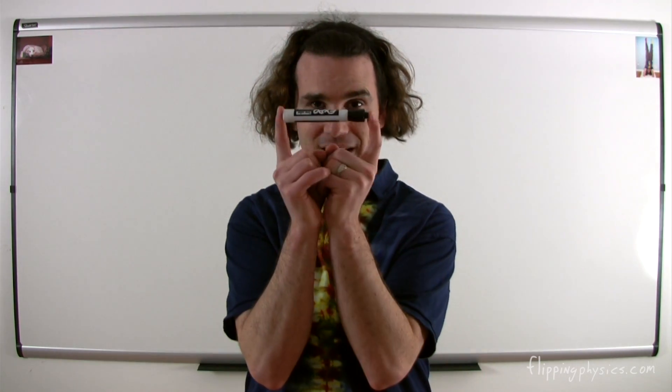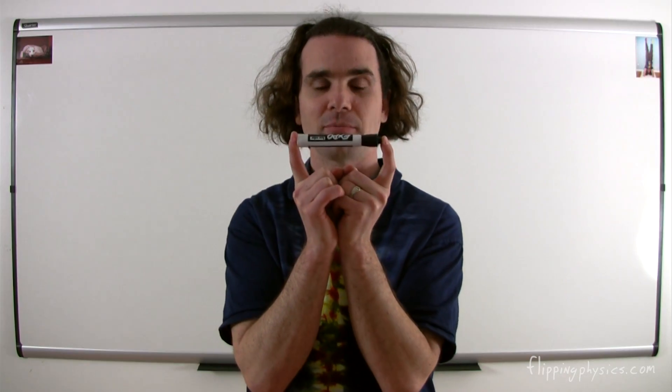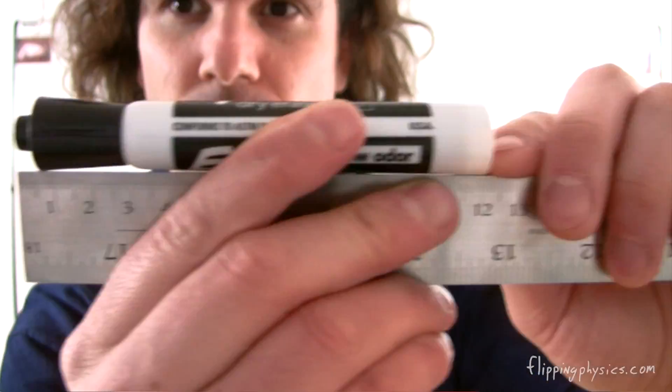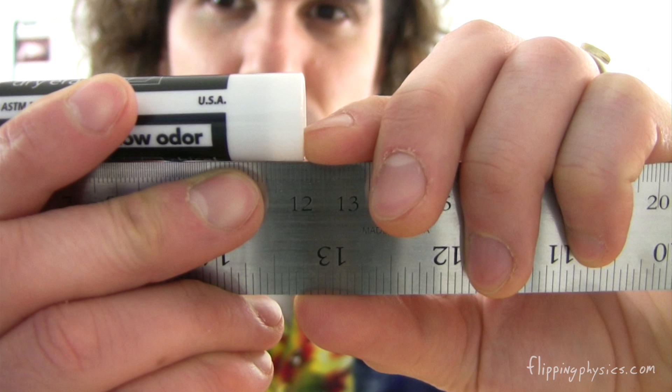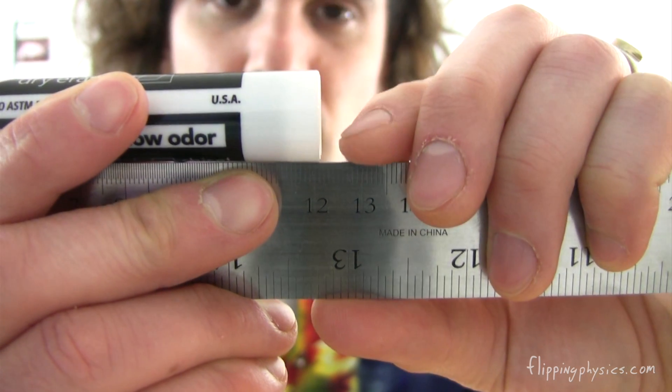For example, we can measure the length of this dry erase marker to 120 millimeters. But we can actually estimate one beyond that to get 120 millimeters plus one tenth of a millimeter, to get 120.1 millimeters. The key here, though, is to know how many significant digits you have that comprise your significant figures.